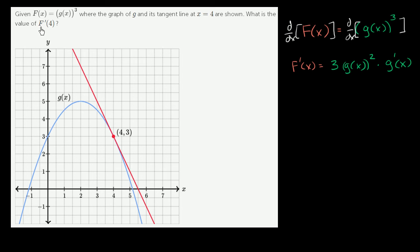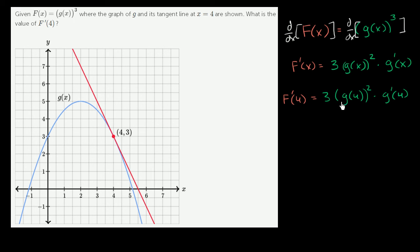So now let's substitute. We want to figure out what this derivative is when x is equal to 4. So f prime of 4 is equal to 3 times g of 4 squared times g prime of 4. So what is g of 4? We can just look at our function right over here. When x equals 4, our function is equal to 3. So g of 4 is equal to 3.